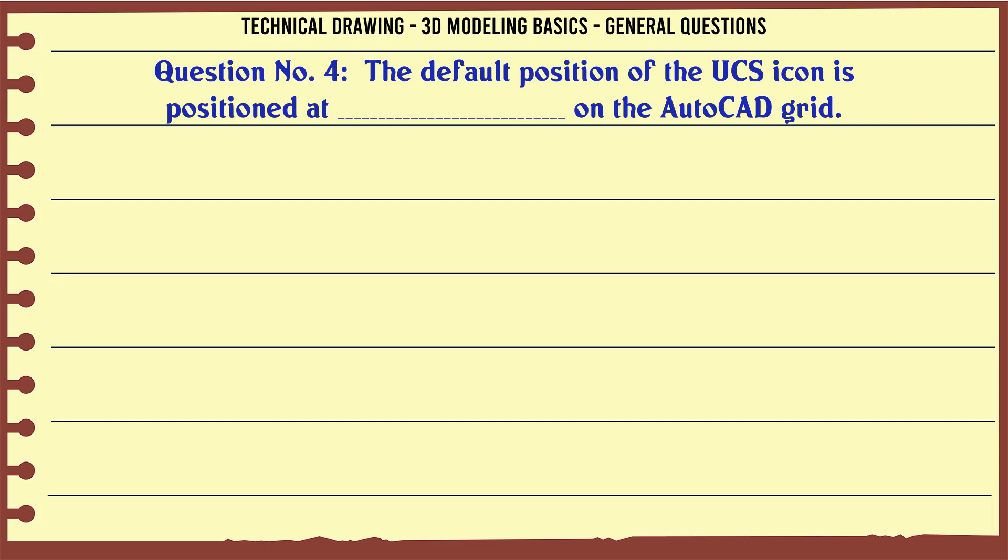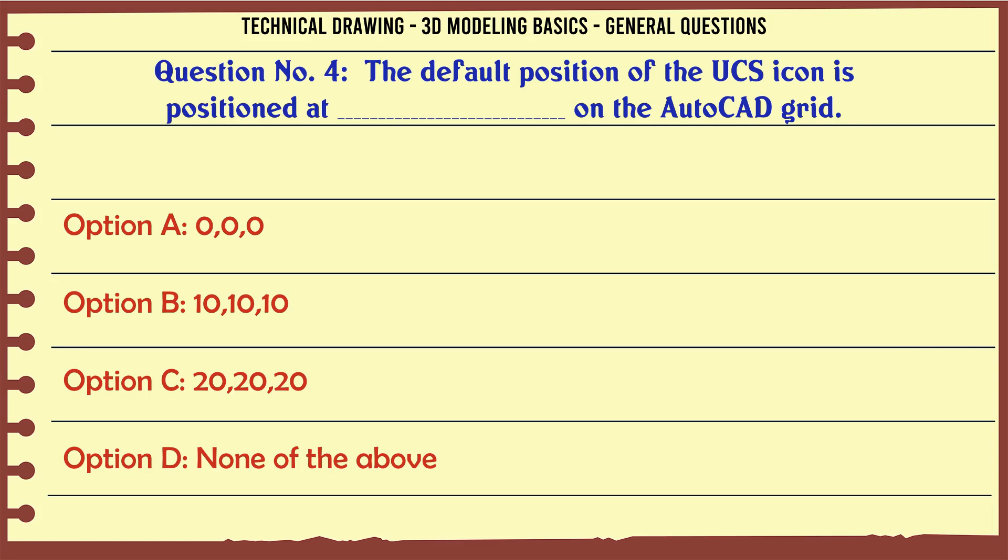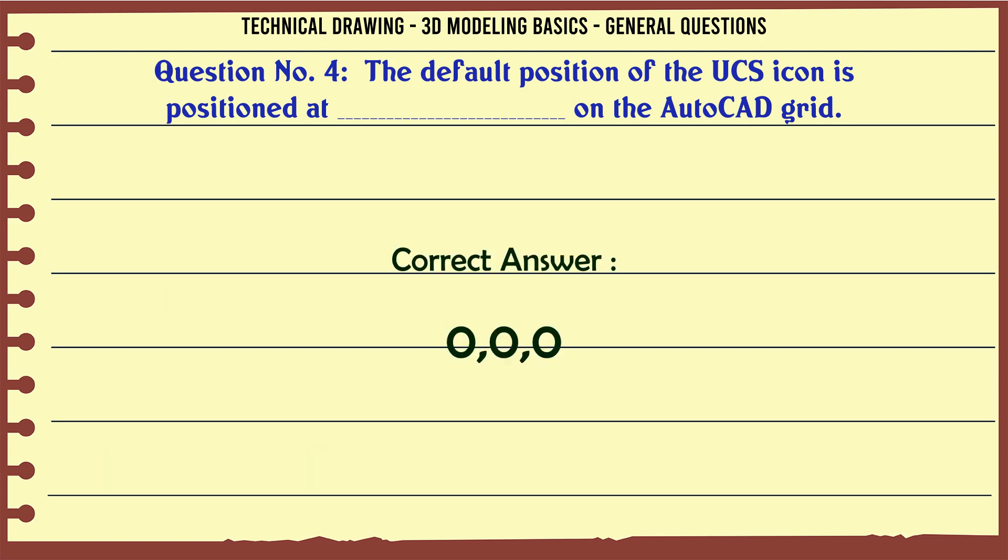The default position of the UCS icon is positioned at on the AutoCAD grid. A. 0,0,0. B. 10,10,10. C. 20,20,20. D. None of the above. The correct answer is 0,0,0.